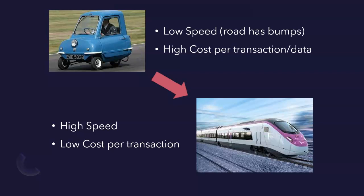You absolutely need high speed. You also need low cost per transaction. Now, imagine one particular data point needs to be transferred from point A to point B, but you also have a second data point, a third data point — they have the same path. Why can't you combine all the data points together and then transfer them to point B? There should be an aggregator in between doing the validation. That is where ZK rollup comes into picture — that is what Polygon does.